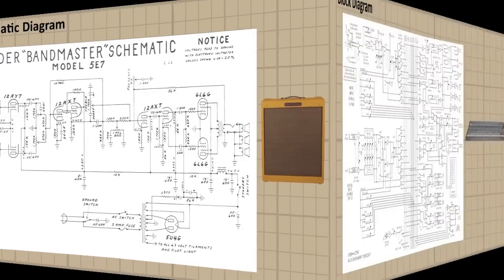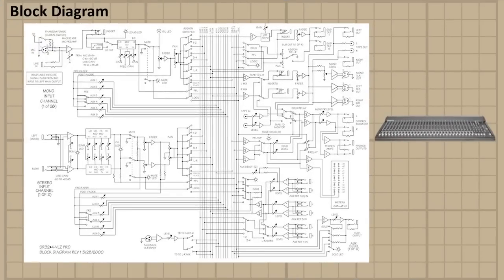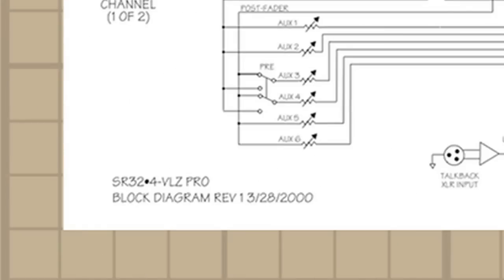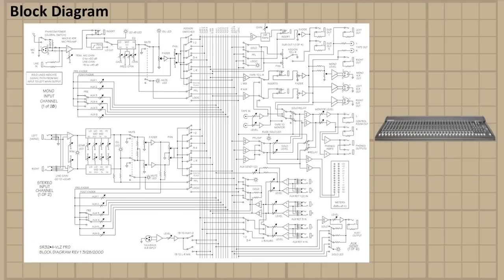Let's look at some block diagrams now. This is a block diagram of a mixing board. This is a Mackie SR-324VLZ Pro block diagram. And you'll notice some differences right off the bat. You'll notice some similarities, too.